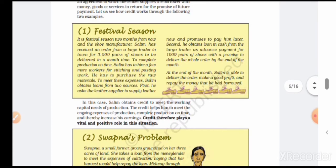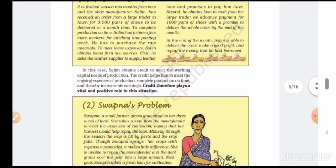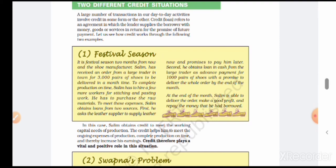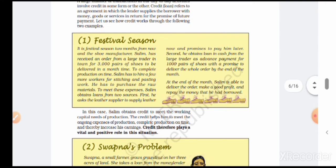The first case is festival season. Shoe manufacturer Salim has received an order from large traders in town for three thousand pairs of shoes to be delivered in a month. To complete production on time, Salim has to hire a few more workers for stitching and pasting work, and purchase raw materials. To meet these expenses, Salim obtained loans from two sources: first, he asked the leather supplier to supply leather now with a promise to pay later; second, he obtained a loan in cash.